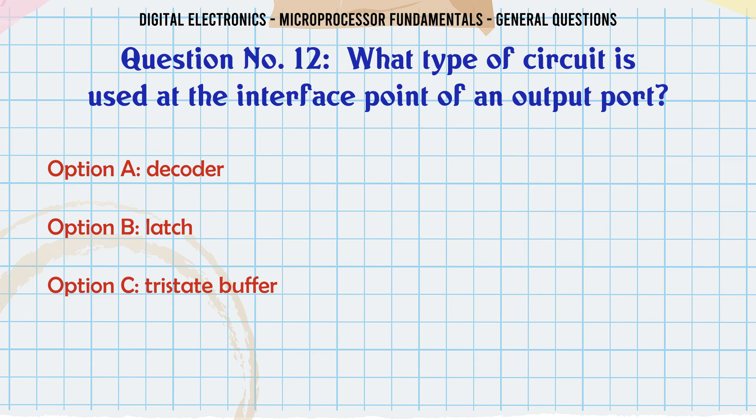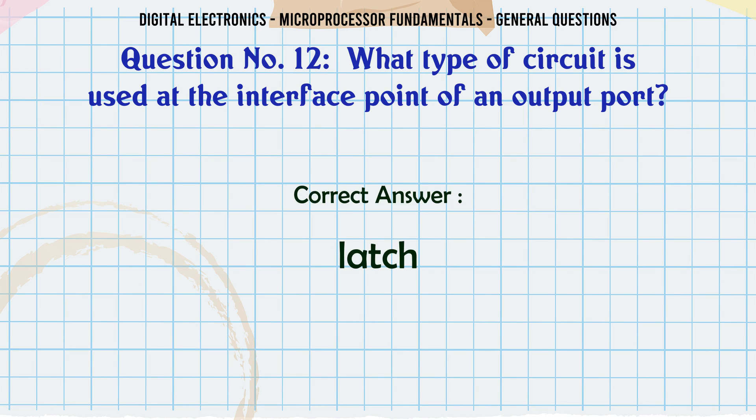What type of circuit is used at the interface point of an output port? A. A decoder, B. Latch, C. Tristate buffer, D. None of the above. The correct answer is Latch.